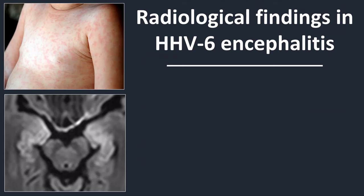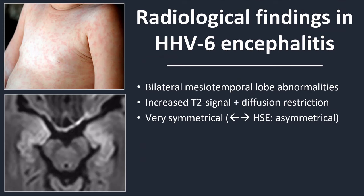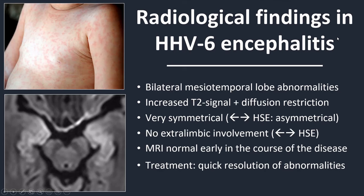The radiological findings in human herpesvirus type 6 encephalitis: we have bilateral abnormalities in the mesiotemporal structures that are extremely symmetrical. This is in contrast with herpes simplex encephalitis, in which the abnormalities are extremely asymmetrical. We see increased signal on T2-weighted images and diffusion restriction on diffusion-weighted images. Generally there is no contrast enhancement and no extralimbic involvement — only mesiotemporal regions — which also contrasts with herpes simplex encephalitis, in which extra-limbic and extra-temporal structures are often involved.